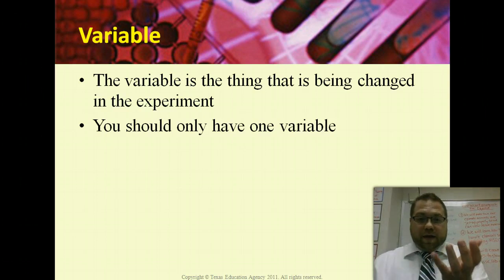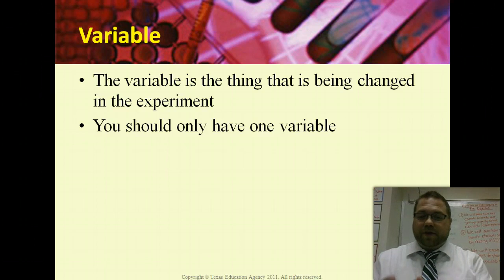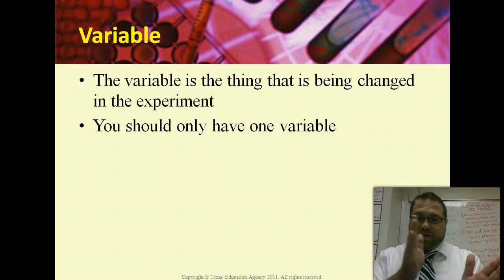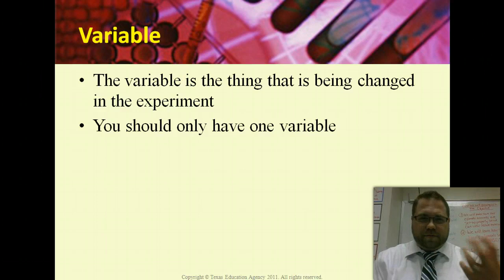You might have a petri dish with a control bacteria that you leave on the desk, then you might have one that you add heat to it. You might have another one that you put in the cold and you see. So the only thing that you are changing is one particular variable, but you have a control.